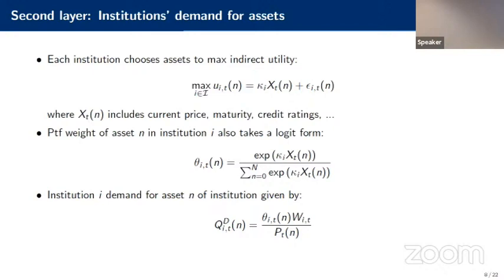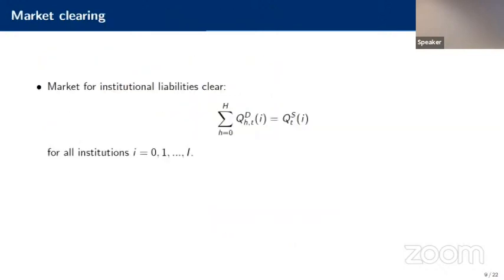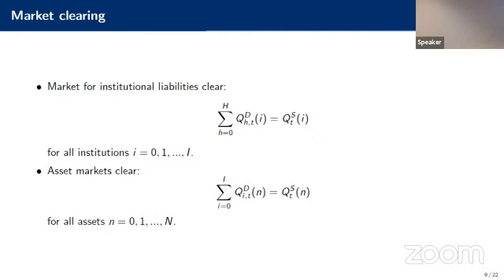So those are the two layers. To clear the market, we first have to clear institutional liabilities so that the total supply of institutional liabilities equals household demand, and the markets for assets also clear where the total supply of each asset equals demand across all institutions. Here we assume zero net issuance, but we can easily extend the model to include issuance.